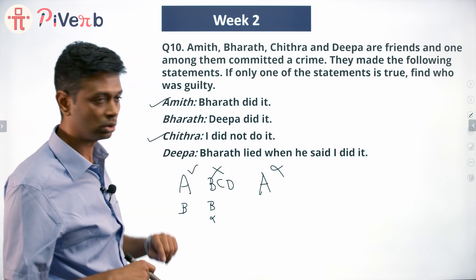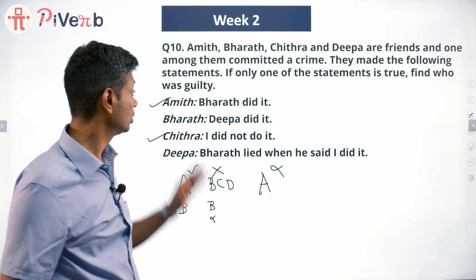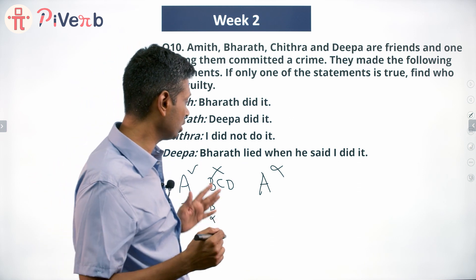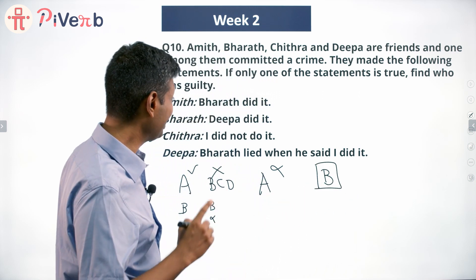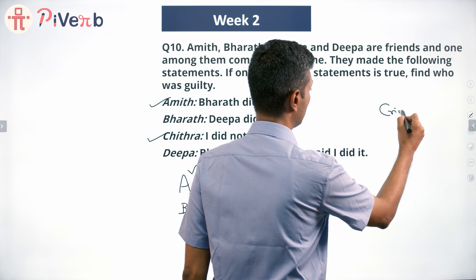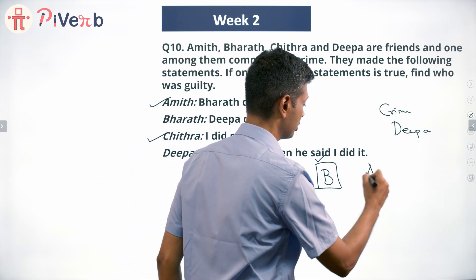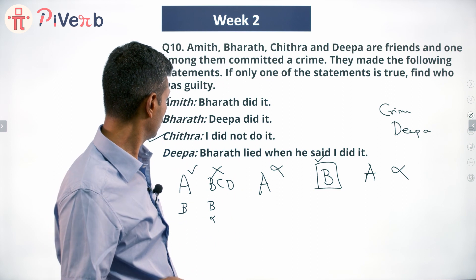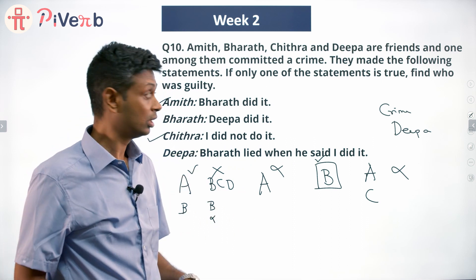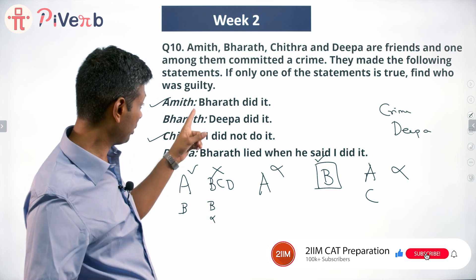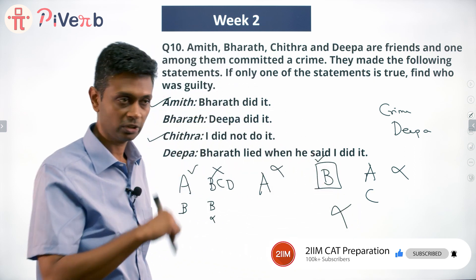If A were true, then C would also have to be true, so we cannot have a scenario where only A is true — that is out. Moving to B: Bharat says Deepa did it, and if B is true, the crime is committed by Deepa. A saying Bharat did it would be false — consistent. But Chitra saying 'I did not do it' would be true. So if Deepa did it and B is true, C is also true. B alone speaking the truth is also ruled out.